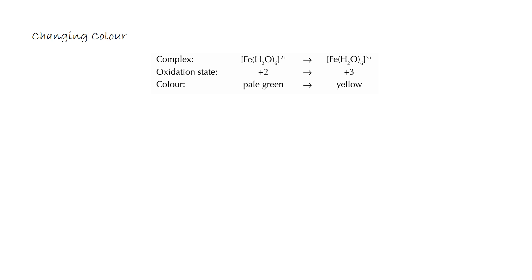We'll see as we go through that complexes change colour, and they do so for one of three important reasons. Here we can see an observation with Fe(H2O)6 2+ to Fe(H2O)6 3+. We're going from pale green to yellow, and in this particular example the change in colour is because there is a change in oxidation state of the metal. And this is simply going to change the energy gap that we were observing before.